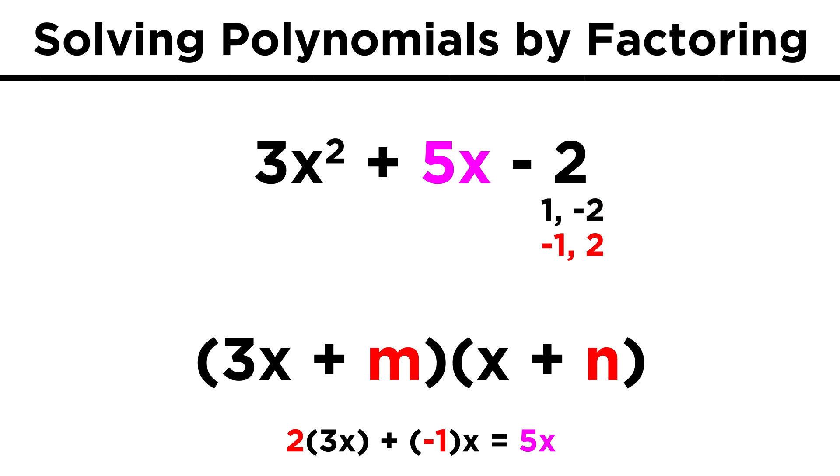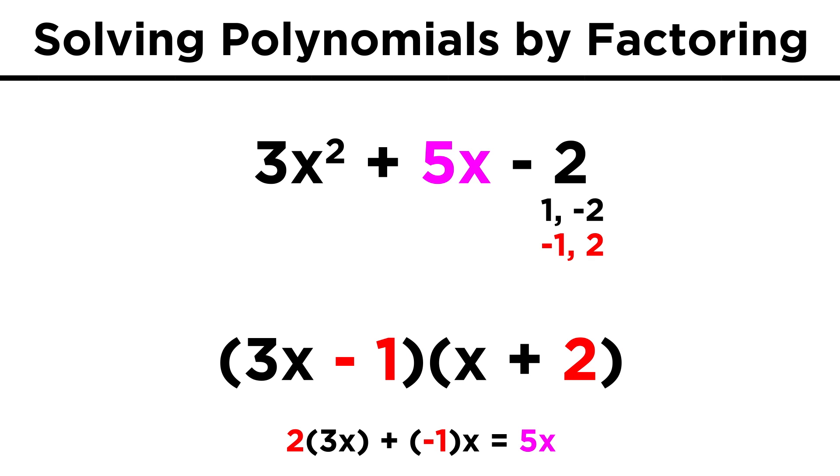How about negative one and positive two? We quickly see that if we multiply the two by the 3x, and the negative one by x, we get 6x - x, or 5x. So we place the negative one and the two into these binomials, making sure to put them in the correct spots.